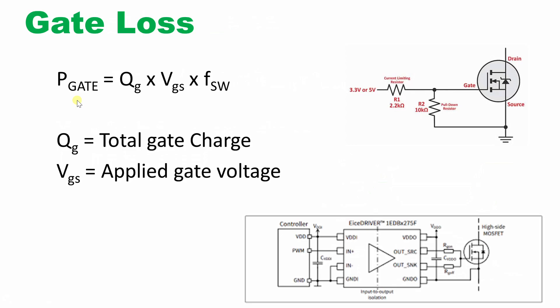There is no current flowing through the gate terminal because the gate is completely insulated. However, we apply a charge — the QG value — to the gate terminal, which induces the opposite polarity and allows drain-to-source current to flow. The formula for gate loss is: total gate charge × VGS × switching frequency (FSW). The total gate charge value is given in any datasheet.